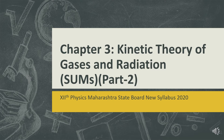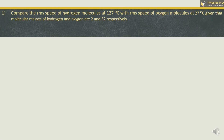Let us solve the first sum: Compare the RMS speed of hydrogen molecules at 127°C with the RMS speed of oxygen molecules at 27°C, given that molecular masses of hydrogen and oxygen are 2 and 32. So we have molecular mass of hydrogen = 2 and molecular mass of oxygen = 32.